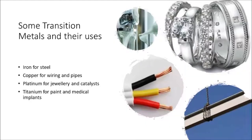Here are some transition metals and their uses: iron for steel, copper for wiring and pipes, platinum for jewellery and catalysts, and titanium for paint and medical implants.